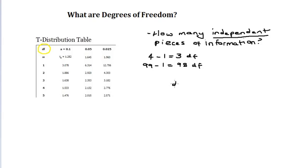The formula is degrees of freedom equals n minus one. n is the number of items in the sample.